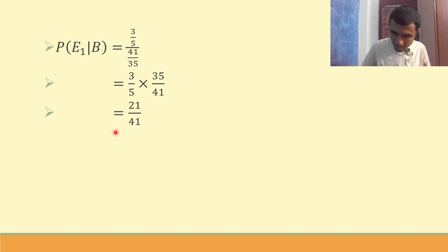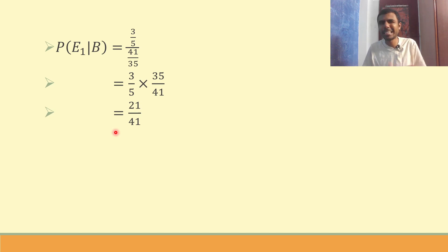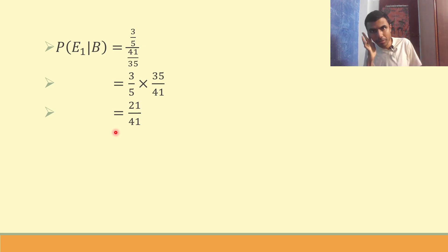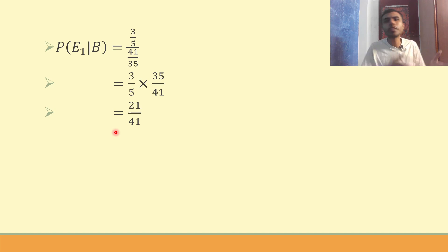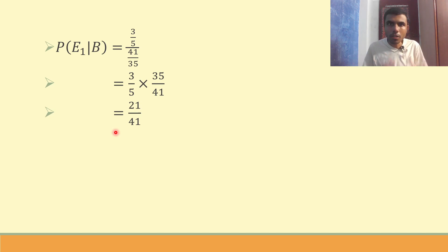That's it — 21/41 is what we had to find. I hope I didn't bore you by repeating things over and over again. If you could understand Bayes' theorem by this, well and good. If you have any doubts, just comment. But before asking, I would suggest watching the video once or twice at least — it's a little deep concept, and to understand deeper things you need to pay attention and listen again and again.